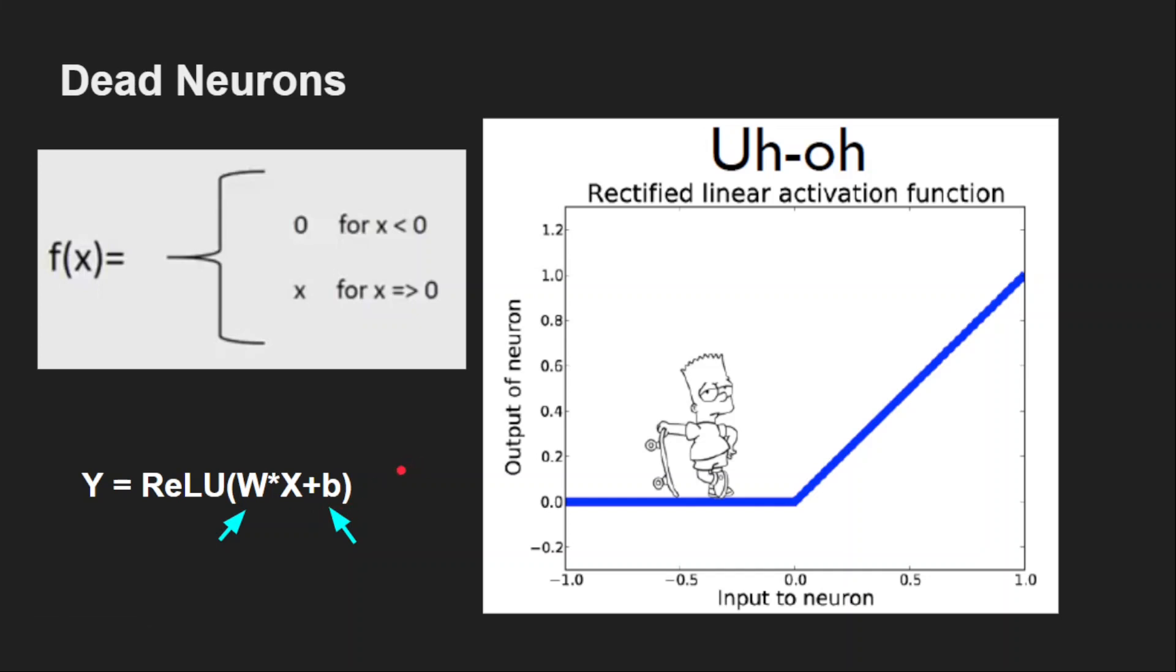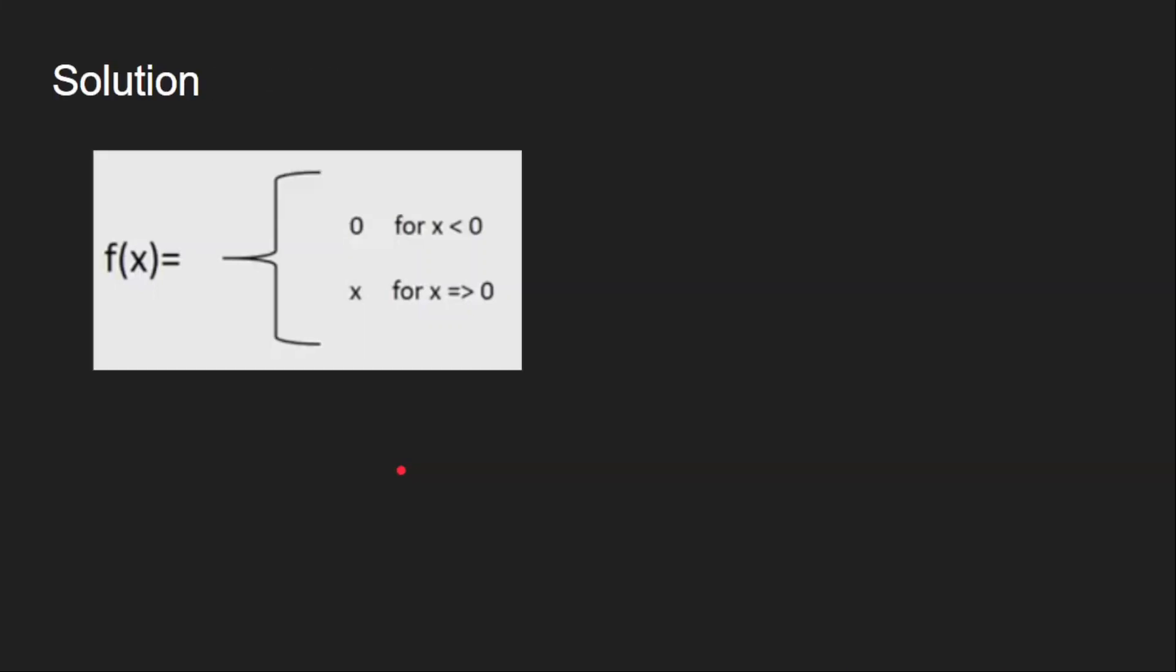So to solve this, there are many variants that came after this. The idea is pretty simple. We should not give output as zero for negative inputs. It is as simple as that. But what should be the output in this case?